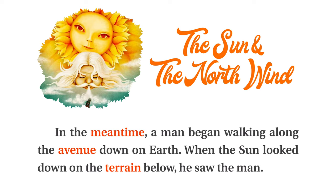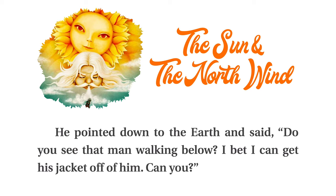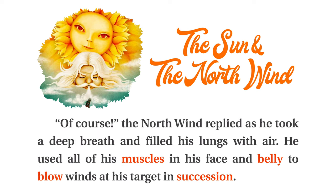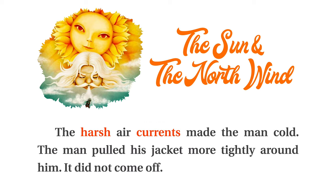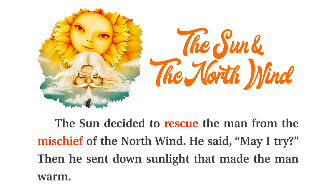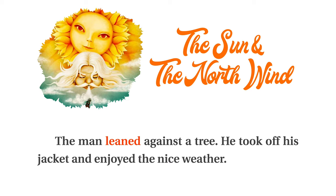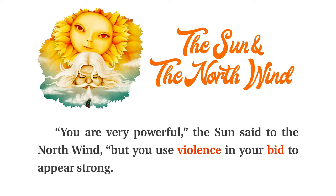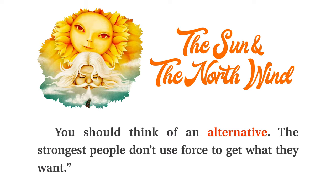In the meantime, a man began walking along the avenue down on earth. When the sun looked down on the terrain below, he saw the man. He pointed down to the earth and said, Do you see that man walking below? I bet I can get his jacket off of him. The north wind replied as he took a deep breath and filled his lungs with air. He used all of his muscles in his face and belly to blow winds at his target in succession. The harsh air currents made the man cold. The man pulled his jacket more tightly around him. It did not come off. The sun decided to rescue the man from the mischief of the north wind. He said, May I try? Then he sent down sunlight that made the man warm. The man leaned against a tree. He took off his jacket and enjoyed the nice weather. You are very powerful, the sun said to the north wind. But you'll use violence in your bid to appear strong. You should think of an alternative. The strongest people don't use force to get what they want.